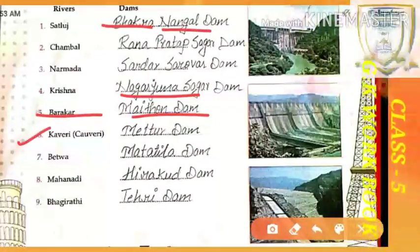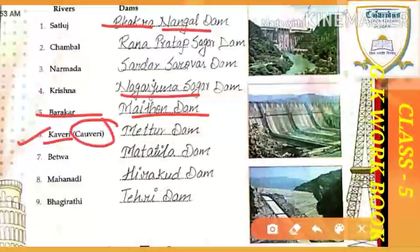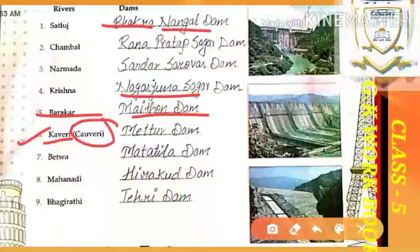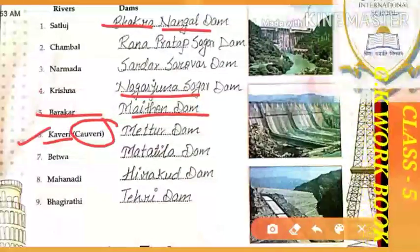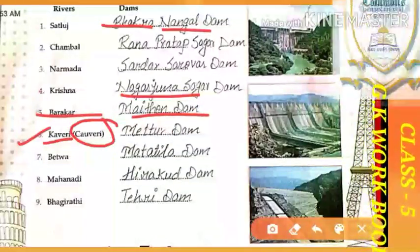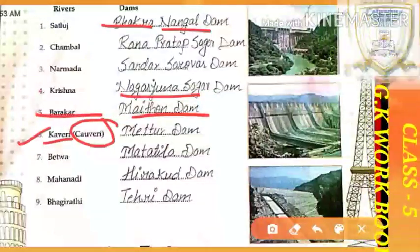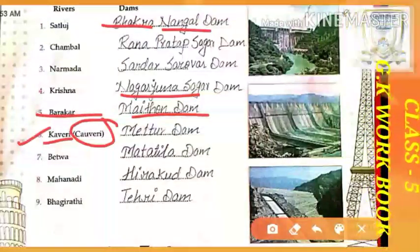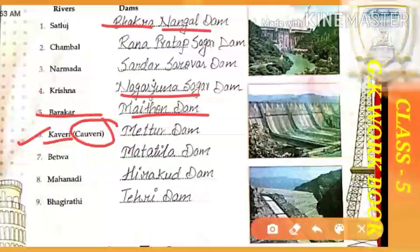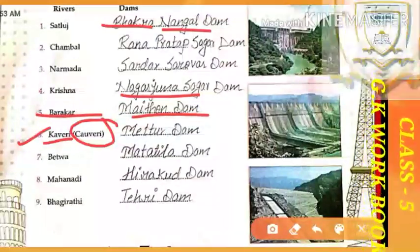The next river is Kaveri. The earlier spelling of this word — what is the spelling of Kaveri? K-A-V-E-R-I — Kaveri. Okay.